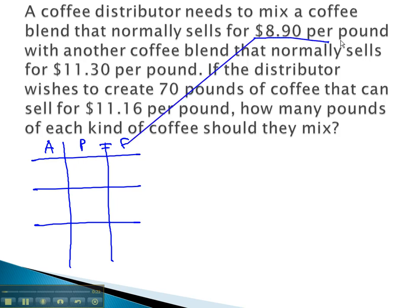One blend normally sells for 8.90 per pound. We don't know the amount, but we do know the price on this blend is 8.90.